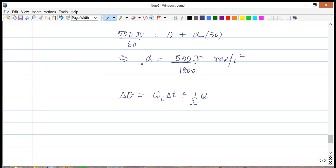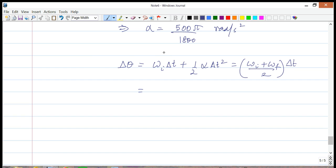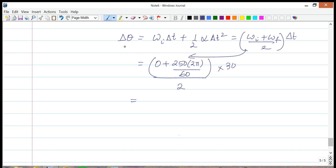Let's figure out the total angle. First we'll use this equation: delta theta equals omega i delta t plus one half alpha delta t squared. Actually, we could have also used omega i plus omega f over 2 times delta t. In fact, I'm going to use that one. This gives me equal to 0 plus 250 times 2π, so 500π by 60, divided by 2, multiplied by 30.